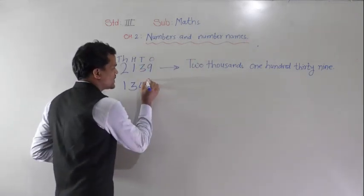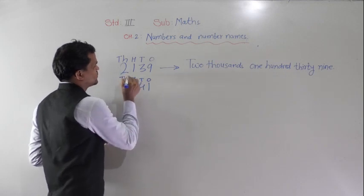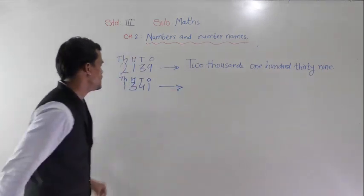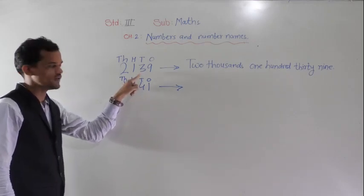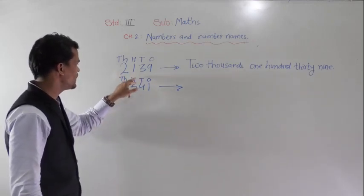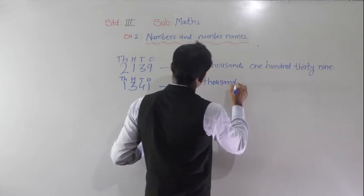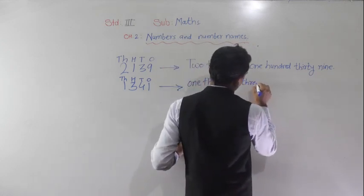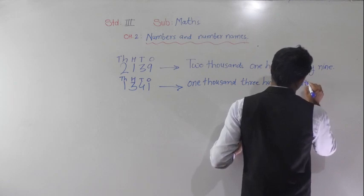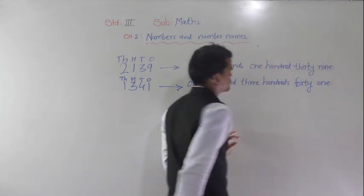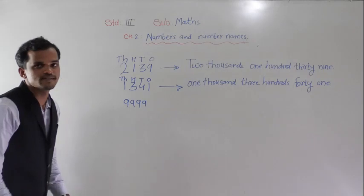Now, this 1 comes at the 1s place, 4 comes at the 10s place, 3 comes at the 100s place, and 1 comes at the 1000s place. So read this number: 1300 and 41 — that is 1341.